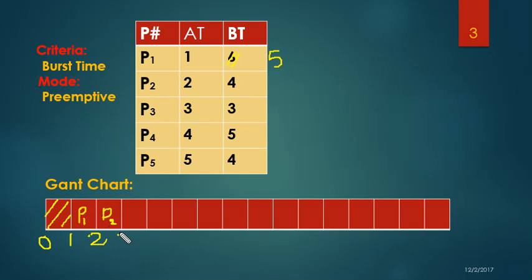It's now time 3 and P2's remaining burst time is now 3. At time 3, P1, P2, and P3 have all arrived, since P3's arrival time is 3. I'm going to choose the smaller burst time from P1, P2, and P3. P2 and P3 both have burst time 3, so they are tied. I'm going to choose P2 again to continue running since the CPU has already been using it.